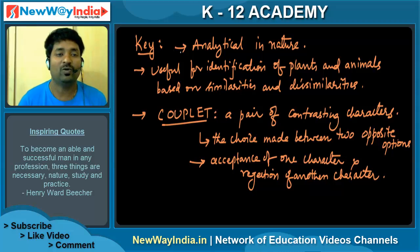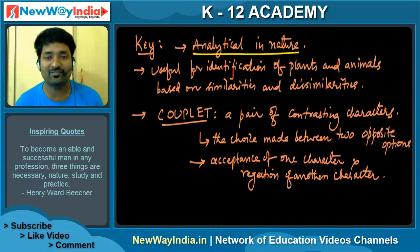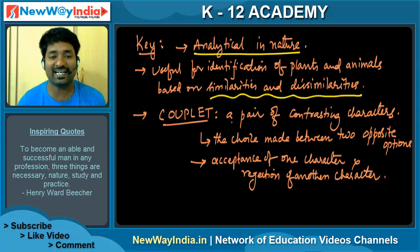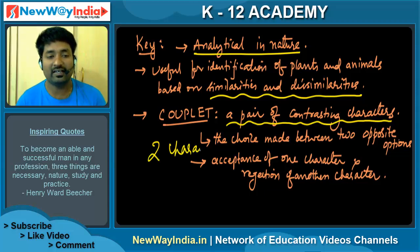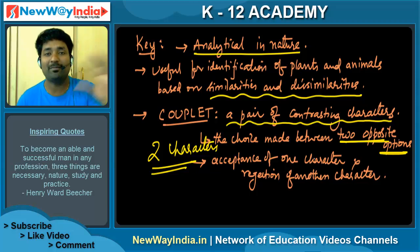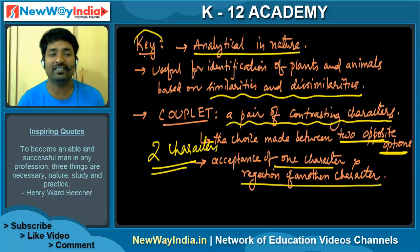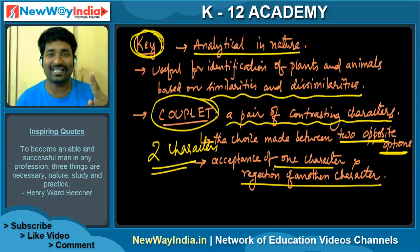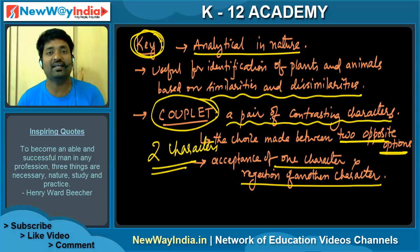The next one is key. What is a key? It is an analytical tool based on comparison. We take two contrasting characters — a couplet is a pair of contrasting characters. Two opposite characters are taken, and between these two options we can compare easily. One character is accepted and the other is rejected. Based on those two characters, organisms are identified, studied, and categorized. That is what is called a key.